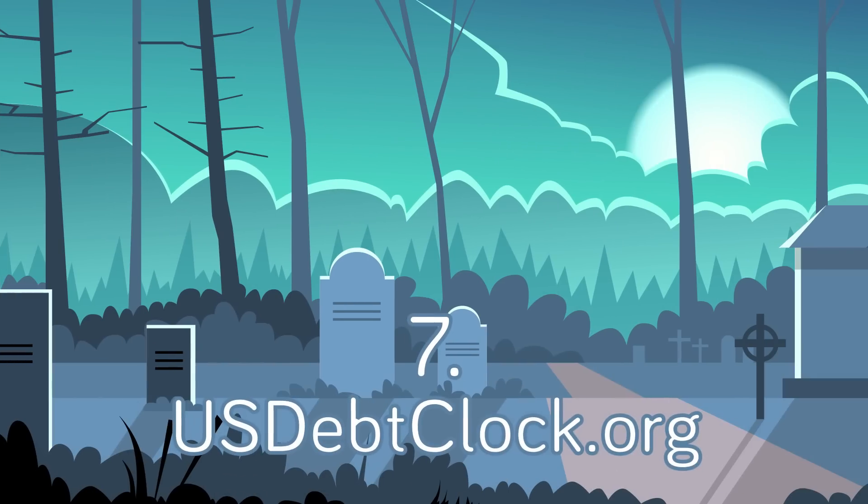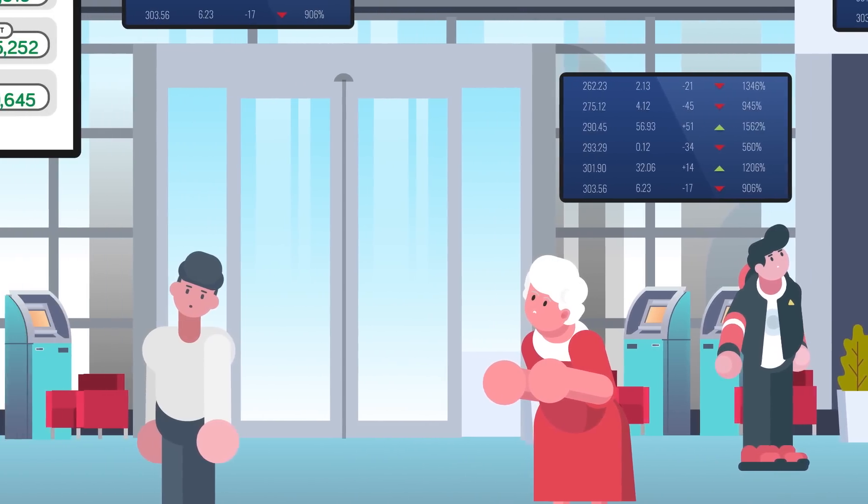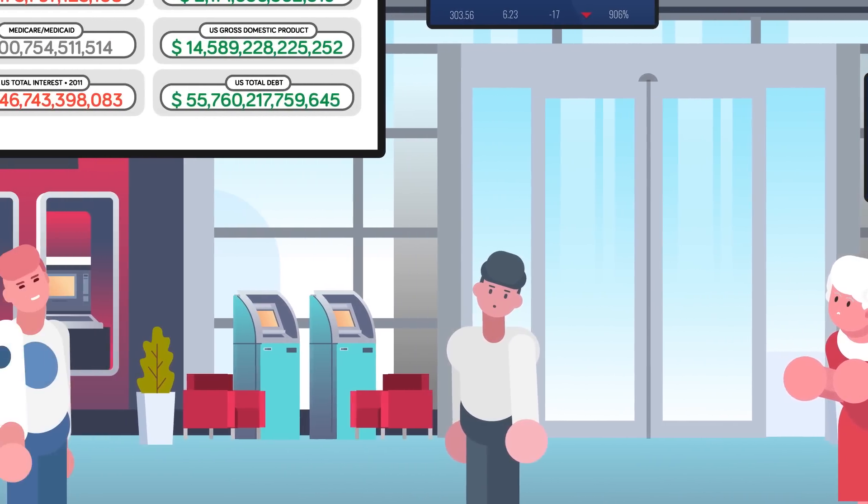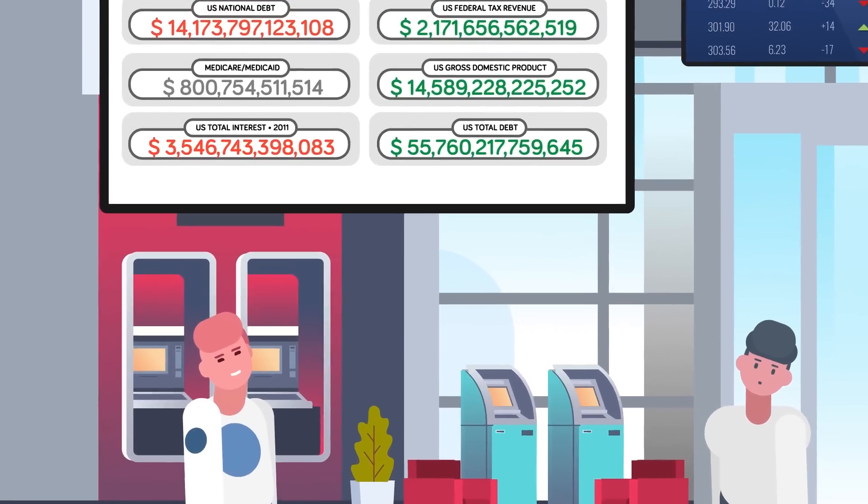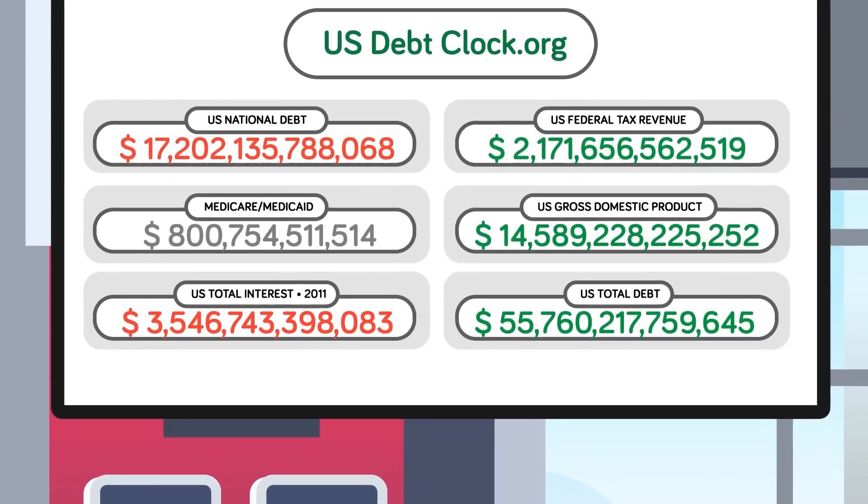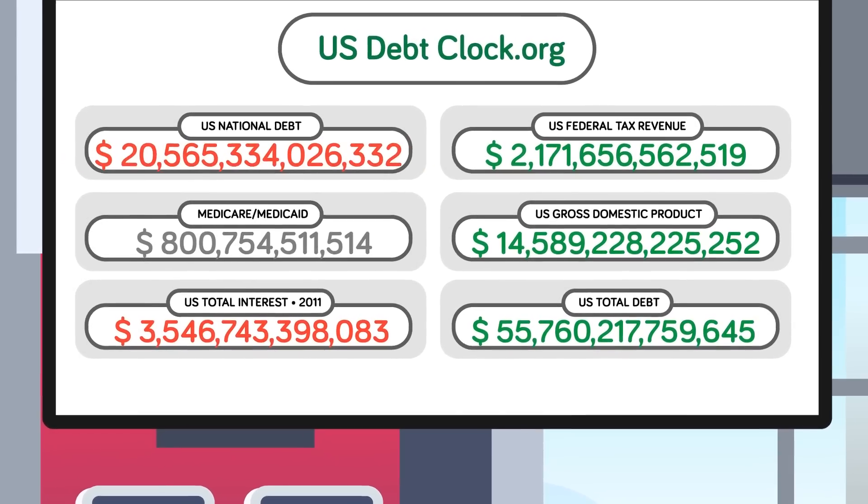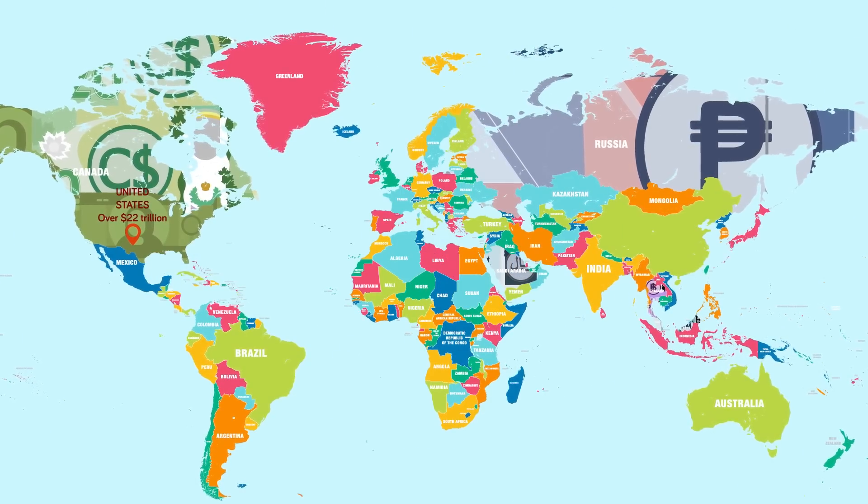Number 7: USdebtclock.org. Are you feeling secure at the moment? Well don't. According to usdebtclock.org, the world is basically approaching financial ruin. You can watch the mind-blowing rate at which countries around the world are falling further and further into levels of debt that are simply unbelievable. Some of the numbers change so quickly you can't even focus on them before they change again. The US is currently over $22 trillion in the hole, and that's gone up thousands in the few minutes we've been looking at it.